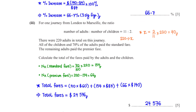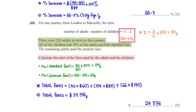For one journey from London to Marseille, the ratio of adults to children equals 11 to 2. There were 220 adults in total. All children and 70% of the adults paid the standard fare; the remaining adults paid the premium fare. Calculate the total fares paid. First, let's find the number of children. The ratio is 11 to 2; with 220 adults, cross-multiplying gives us 40 children.